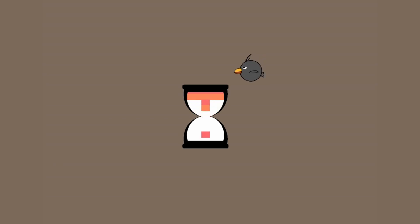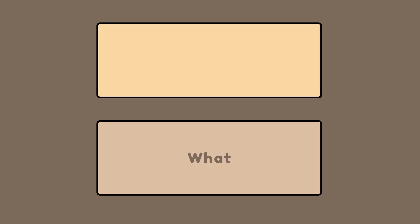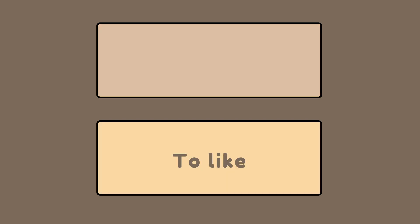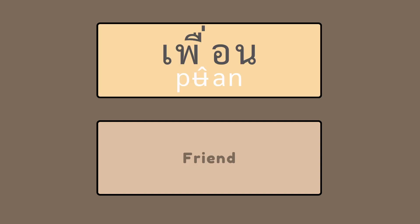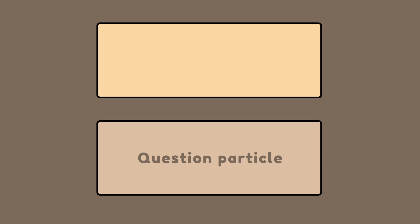Before we move on to the quiz, listen again. This time, the English definition is given first, followed by the Thai word. Name — ชื่อ. What — อะไร. Question particle — ไหม.